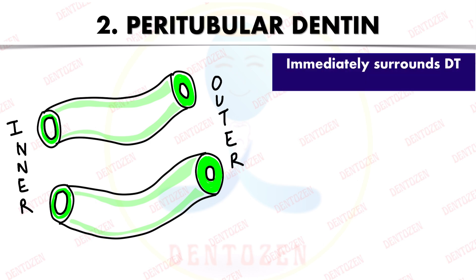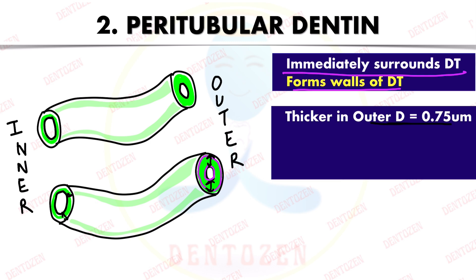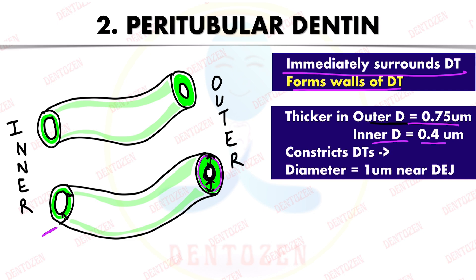Peritubular dentine — 'peri' means around — immediately surrounds the dentinal tubule and forms its wall. Looking at the thickness of this dentine: on the outer side it is about 0.75 micrometers, whereas on the inner side of dentine it is only 0.4 micrometers. On the outer side it constricts the dentinal tubule, making the diameter near the dentino-enamel junction about one micrometer.